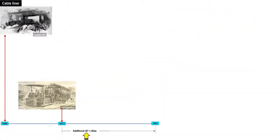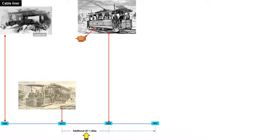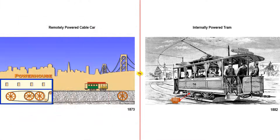After San Francisco, 40 cities installed their own cable cars over the next several decades. Sometime in 1882, at the height of the popularity of cable cars, the tram was invented in Bremen, Germany. The vehicle would be powered by an electric motor, already invented decades earlier in 1834, with electricity sourced from overhead wires. During this time, subways already operated below ground. The competition was between the remotely powered cable car and the internally powered tram — one would win and make the other obsolete.